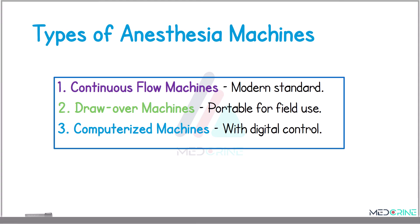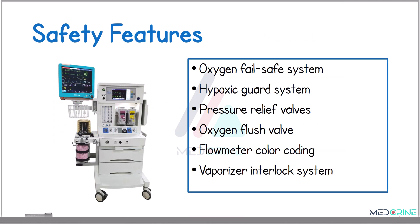There are several types of anesthesia machines. The three common types are the continuous flow machine, which is the standard anesthesia type in modern operating rooms; the draw-over machine, which is ideal for field use because of its portability; and a computerized machine that offers advanced digital control.